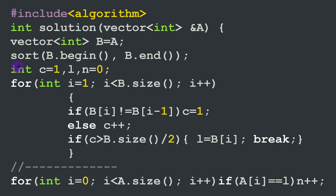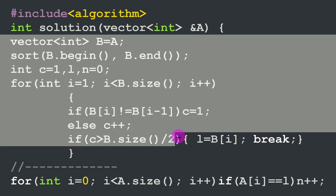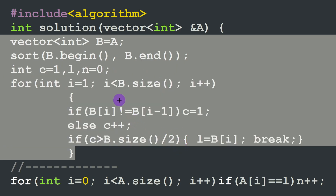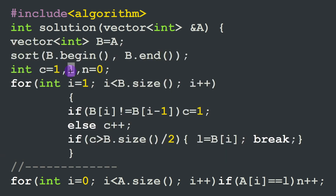Now we can write this in C++ and Python. The solution function in C++ takes the array as a parameter. The first part finds the dominator — this is the same solution applied in the previous Dominator exercise. We define a new vector b equal to a, then sort b in increasing order. We keep a intact to preserve its original indexing.